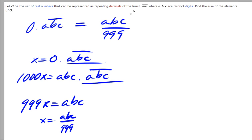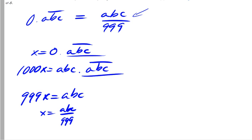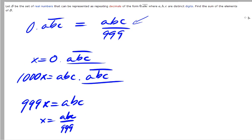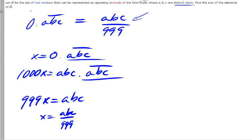So instead of counting these decimals, we can just count these fractions. And let's see, a, b, c have to be distinct. Let's count the number of values abc such that a, b, c are distinct.